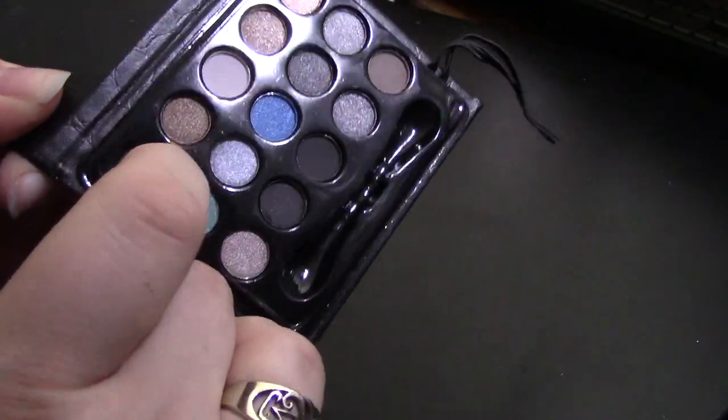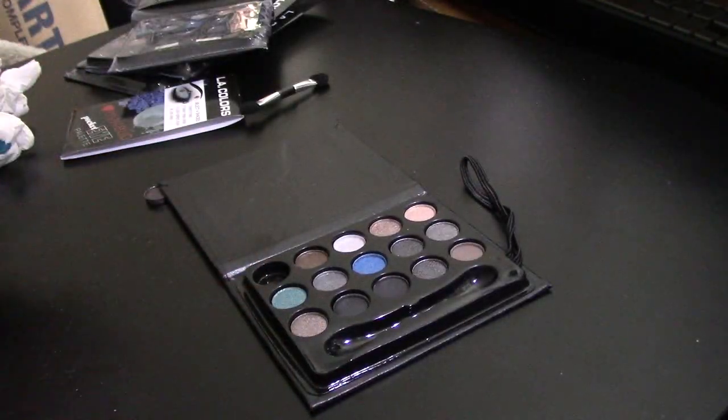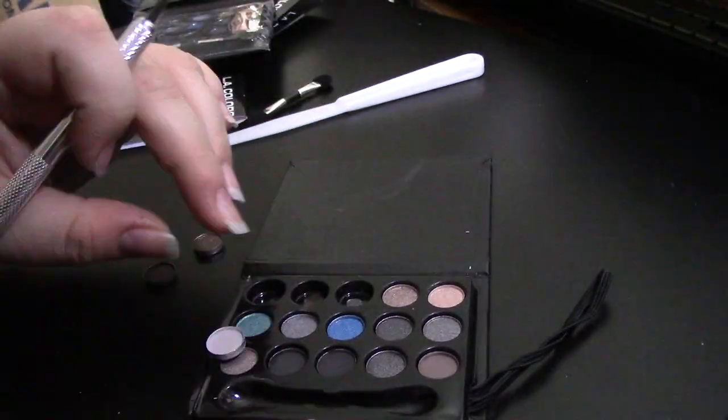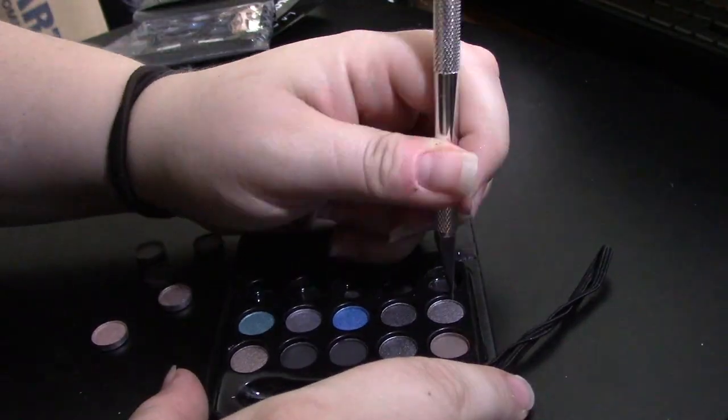The first step to prepping any makeshift palette is to take out any existing product and clean up your surfaces. Don't forget to look for any hidden tape, glue dots, or stickers to remove.